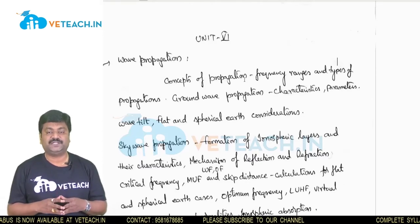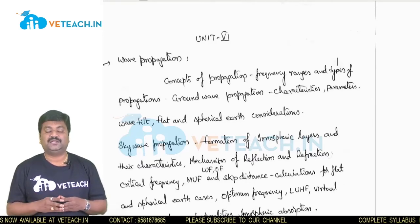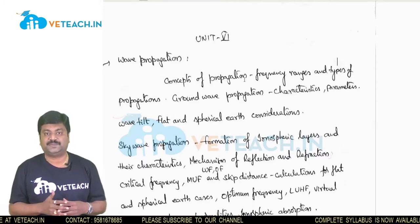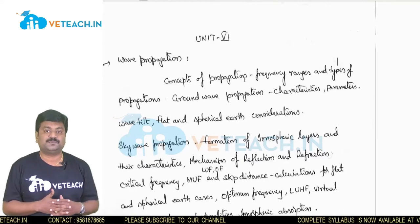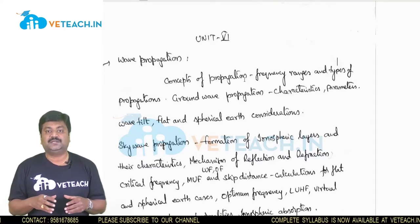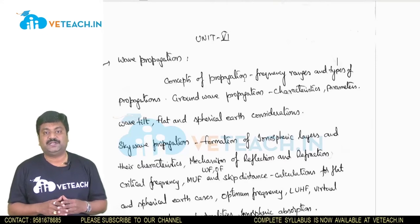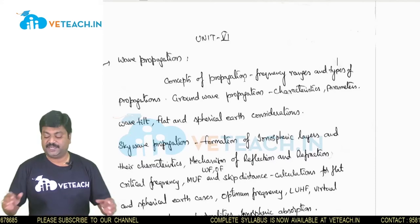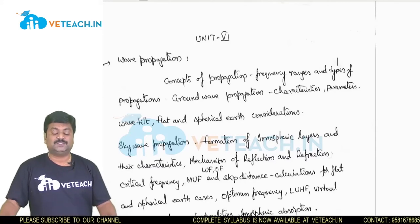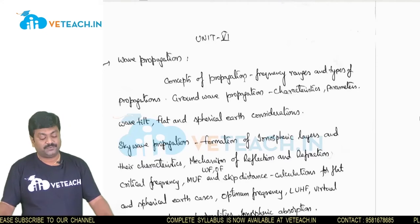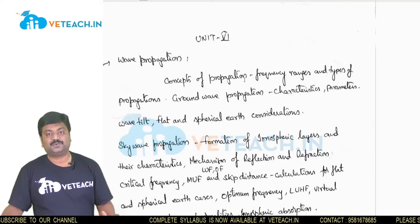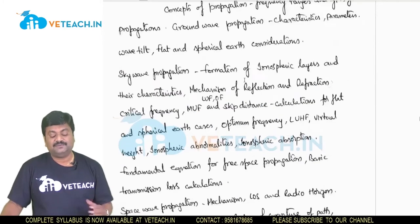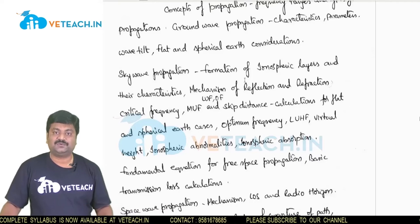We have been concentrating here on in what way the wave is propagating from a transmitter to free space, and what are the possible mediums, and what are the different parameters that are needed to be considered, and what are the definitional parts that are needed to be identified. This unit deals with wave propagation, the concept of propagation, their frequency ranges, and types of propagation. The first type is ground wave propagation.